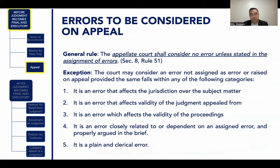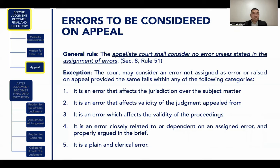As a general rule, the appellate court shall consider no error unless stated in the assignment of errors. In your appellant's brief or memorandum, you must indicate in the assignment of errors the errors committed by the lower court. However, the court may consider an error not assigned, provided it falls under: (1) an error affecting jurisdiction over the subject matter; (2) an error affecting the validity of the judgment; (3) an error affecting the validity of the proceedings; (4) an error closely related to or dependent on an assigned error; or (5) a plain and clerical error.